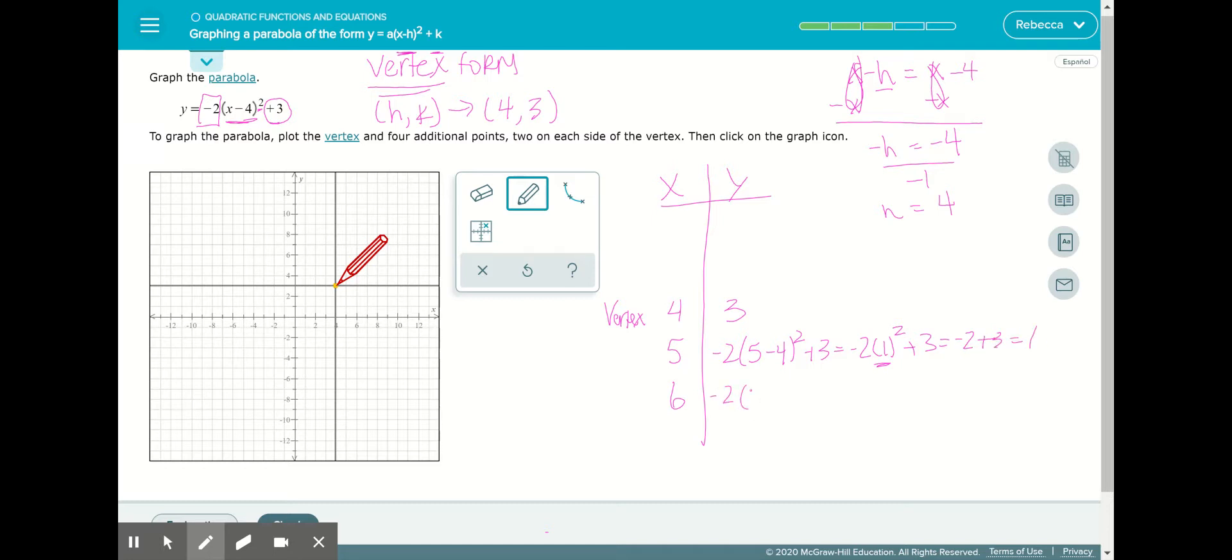Plug in 6 for our x value. Now we have negative 2 times 2 squared plus 3. 2 squared is 4 times negative 2, negative 8. And we're going to add 3, and we're going to have negative 5.